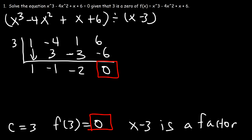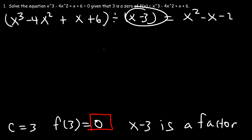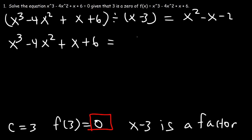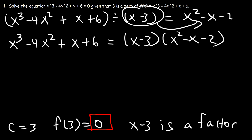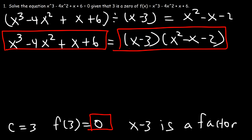Since x³ ÷ x gives x², the result is 1x² minus 1x minus 2. So x³ minus 4x² plus x plus 6 divided by x minus 3 equals x² minus x minus 2. Multiplying both sides by x minus 3, we see that x³ minus 4x² plus x plus 6 equals x minus 3 times x² minus x minus 2.